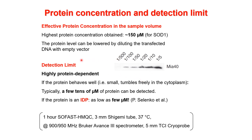These are the dilutions of the vector with empty vector, and you can see that you still get overexpression but at lower and lower levels. The detection limit for NMR is really protein-dependent, because it depends on the tumbling rate and whether your protein is a globular stably-folded protein or an IDP. Typically for folded proteins, as low as a few tens of micromolar can be detected at 900 or 950 MHz. However, if the protein is an IDP, the detection limit can be as low as a few micromolar because it gives rise to sharper signals. These values are relative to a one-hour fast HMQC experiment, as I will show later.